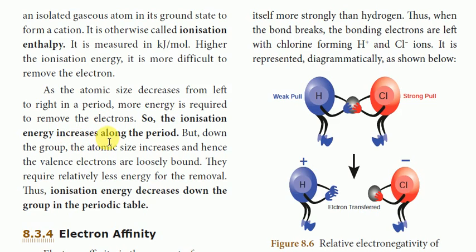Ionization energy increases across the period, and ionization energy decreases down the group in the periodic table.